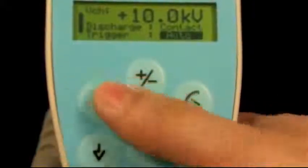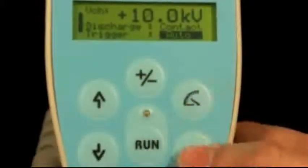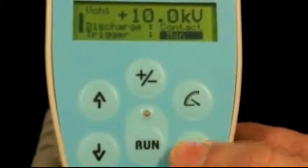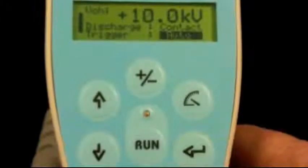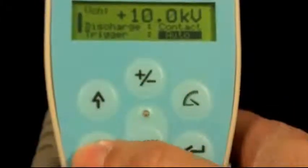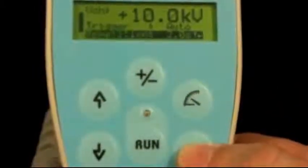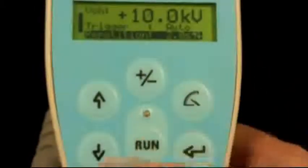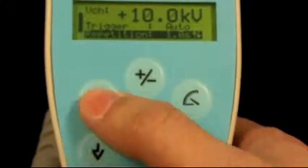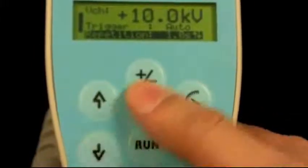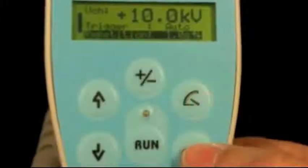Arrow down to the next selection, which is trigger. Select enter to change from auto to manual. Arrow down to next selection, repetition rate. Hit enter to activate the screen and you can use the arrow keys to increase or decrease your repetition rate. Once you have it selected, hit enter.